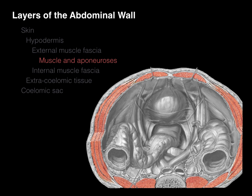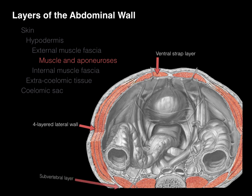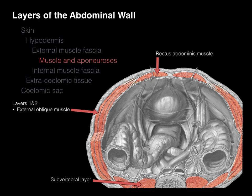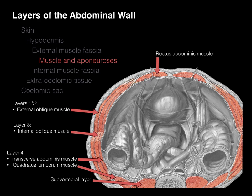Looking at the muscle layers, we can identify familiar patterns: there's the ventral strap muscle, the four-layered body wall, and the subvertebral muscle. The ventral strap muscle in the abdomen is the rectus abdominis — the six-pack — with the small pyramidalis muscle below it. The four-layered body wall consists of the external oblique muscle with its supercostal and body wall layers, the internal oblique muscle, and the transversus abdominis, along with the quadratus lumborum. The subvertebral muscle is the psoas major, with a small psoas minor as well.